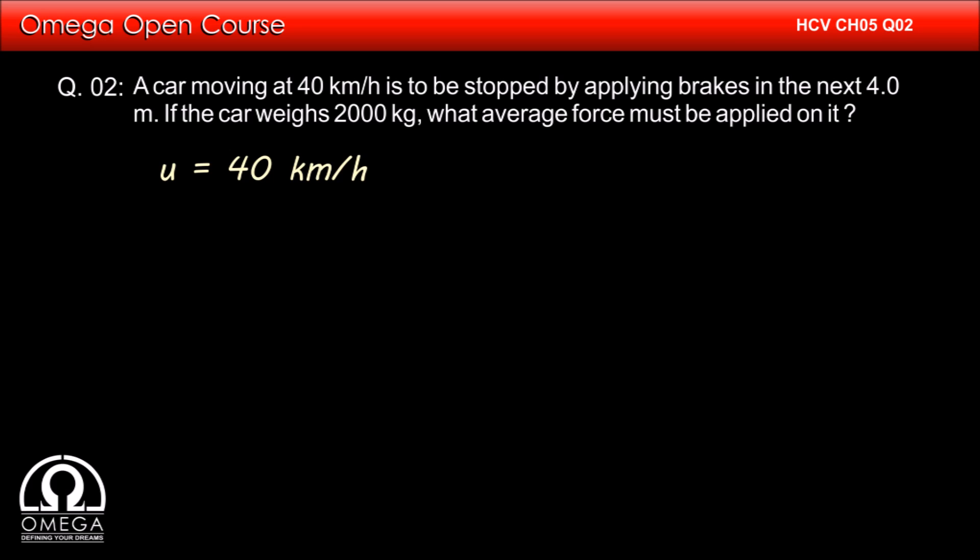The initial speed of the car u is 40 km per hour, which equals 40 times 1000 divided by 60 times 60 meters per second. Simplifying, we get u equals 100 by 9 meters per second.